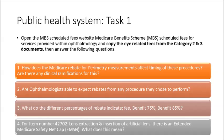And four: for item number 42702 — lens extraction and insertion of artificial lens — there is an Extended Medicare Safety Net cap or EMSN. What does this mean? Make sure you are accessing the latest MBS schedule. Check the date at the bottom of the website page to confirm it is the current or most recent document.